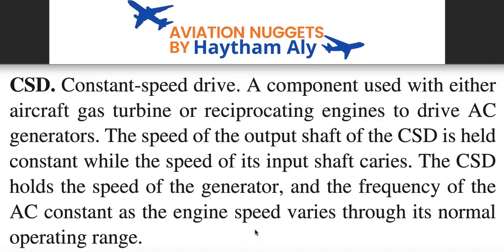As a summary, we now understand why the electrical generation component on the main engine is called an IDG, and the electrical generation component on the APU is just called a generator. The APU doesn't need a Constant Speed Drive, but the main aircraft engine — whether gas turbine or reciprocating — always needs the IDG, which is composed of a Constant Speed Drive plus an AC Generator. Thank you for your good listening. Always fly safely and maintain your aircraft safely. Your host is Haysem Ali — please stay tuned, subscribe to Aviation Nuggets, and have a great day.